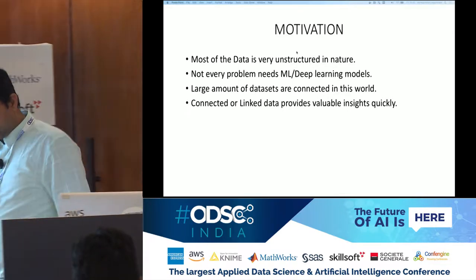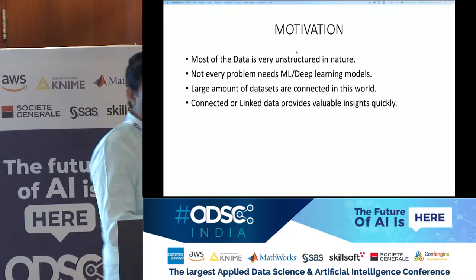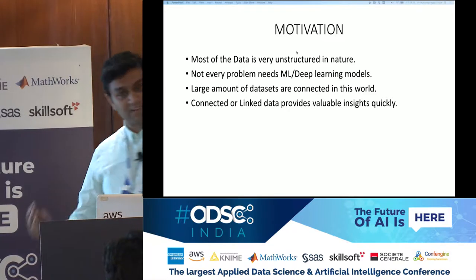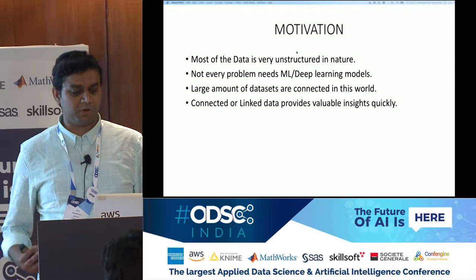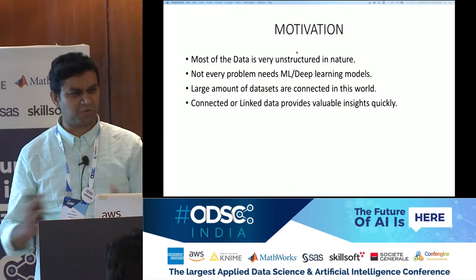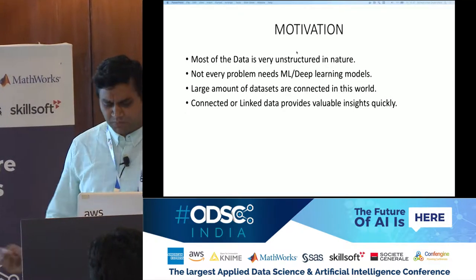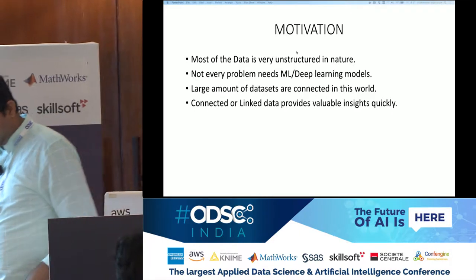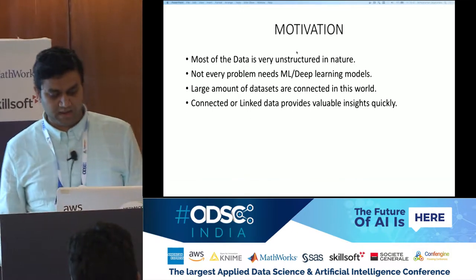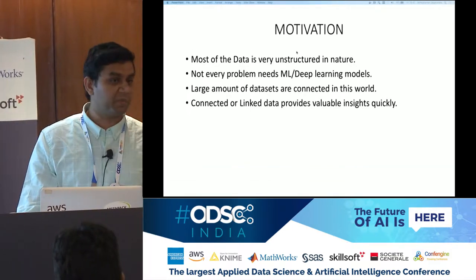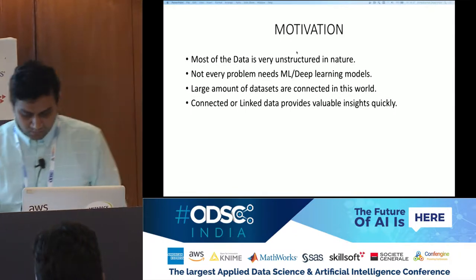Large amounts of datasets are connected in this world. We started with structured data using RDBMS, then moved to unstructured data with Hadoop file systems and data lakes. Now we're coming back to a structured way, but with connected data. Social media has driven that shift. Connected or linked data provides insights quickly — especially at Facebook and Twitter where they have massive amounts of data. The marketing and sales teams use graph models to get valuable insights.